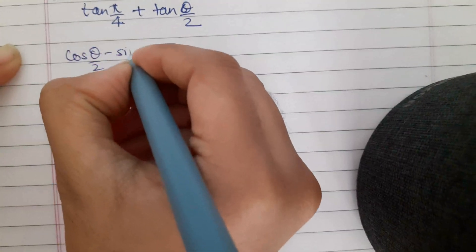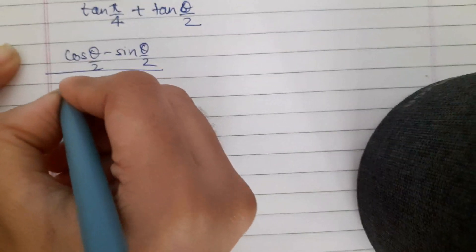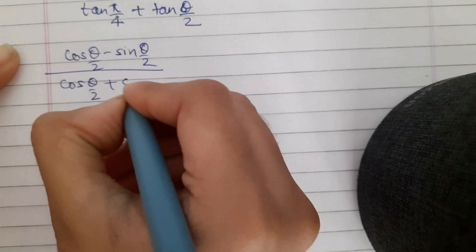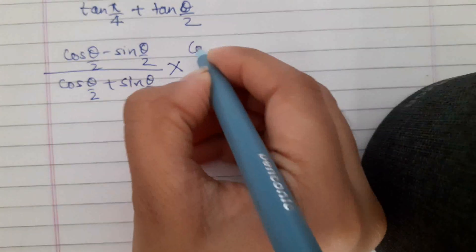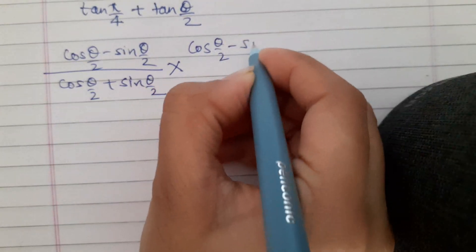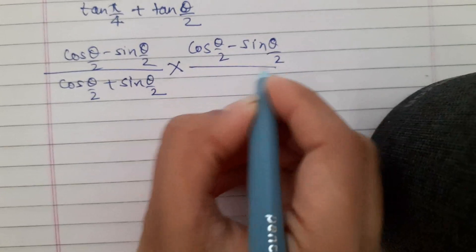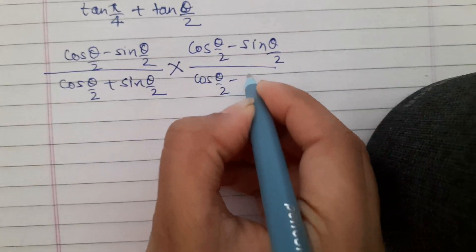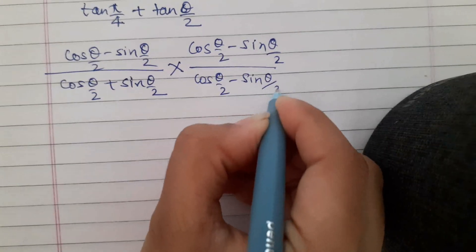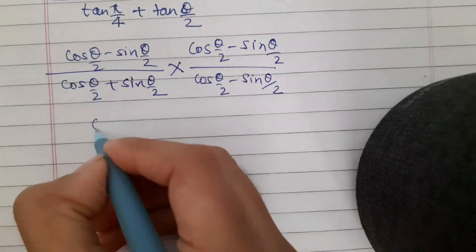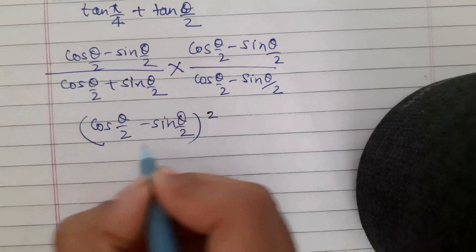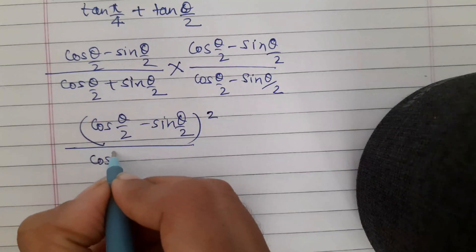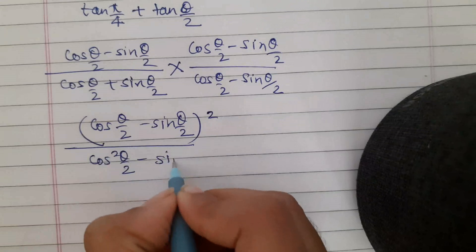For rationalizing, we multiply numerator and denominator by (cos(θ/2) - sin(θ/2)). This gives us (cos(θ/2) - sin(θ/2))² in the numerator, and (cos²(θ/2) - sin²(θ/2)) in the denominator.